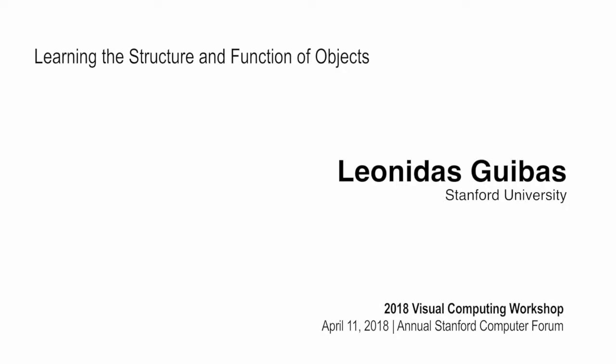In this presentation, I'll briefly go over a couple of projects in my group that relate to this theme of learning the structure and function of objects. Many of our daily activities involve interactions between humans and objects. In fact, a lot of man-made objects are built to support these interactions. For example, they have handles like the pan that you see. Objects are designed with functional parts to support interactions with humans.